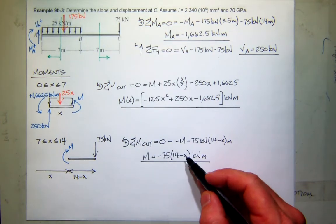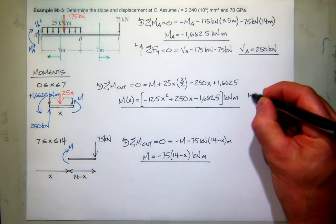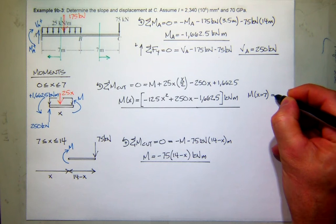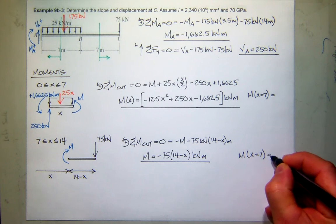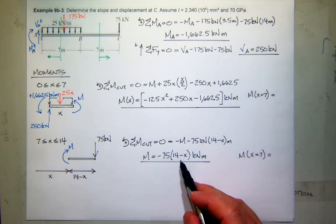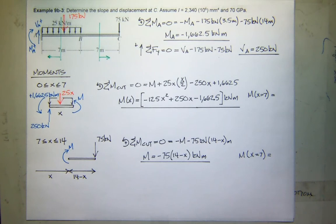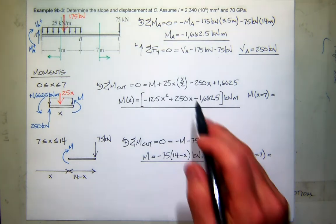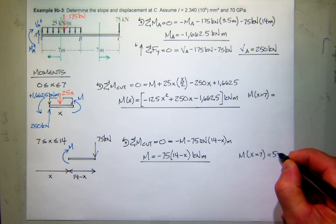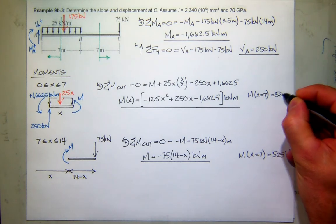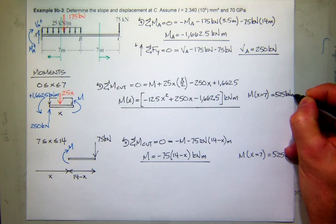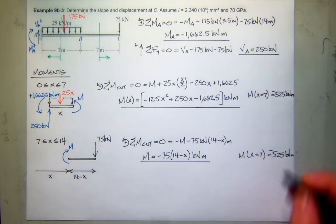So negative 75 times 14 minus x, and that will be kilonewton meters. Now can I check that? Yeah, I know the moment at the free end, right? And the free end is at 14. When I put in x equals 14, it does zero out. Let's check at the point where they match. So what is the moment when x is equal to 7 for this guy? And what is the moment when x is equal to 7 for this guy? They're both going to come out negative, I hope. This is 525? What about that one? Yeah. So 525, and that's kilonewton meters. That was negative. Thank you. I don't have room. I'll just put it up there at the top. Sorry about that. But I'll put my little green check mark. So everything seems to be good with those.